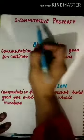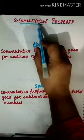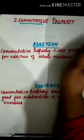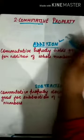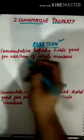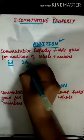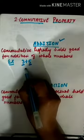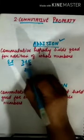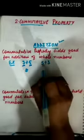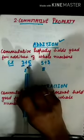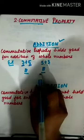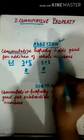Now let us move on to the second property: commutative property. Commutative means that when any mathematical operation is applied to whole numbers, the answer is not affected by changing the order of the numbers. For addition, let me take the example 3 plus 5. Taking 3 first and 5 later gives 8. Now changing the order — 5 first and 3 later — the answer is still 8. My answer is not affected, so commutative property holds good for addition.